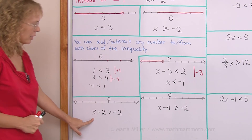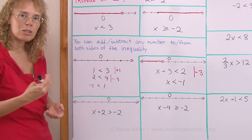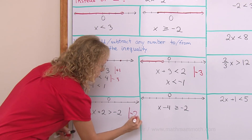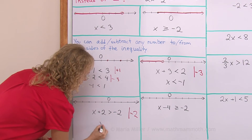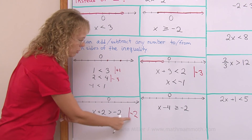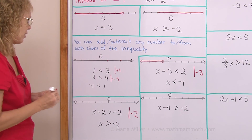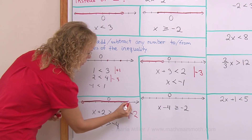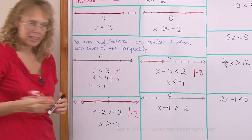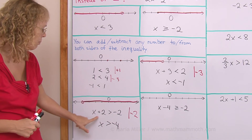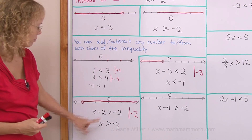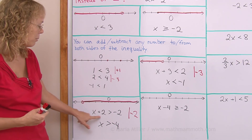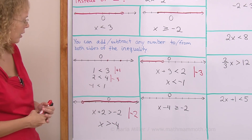Over here: x plus 2 is greater than negative 2. Think of it as an equation — subtract 2 from both sides. The greater than sign stays, and negative 2 minus 2 is negative 4. So x is greater than negative 4. Plotting: negative 4 is not included, but everything greater than negative 4 is. Checking: 3 plus 2 equals 5 — greater than negative 2, yes. 0 plus 2 equals 2 — greater than negative 2, yes. Negative 3 plus 2 equals 1 — greater than negative 2, yes. Looks good.